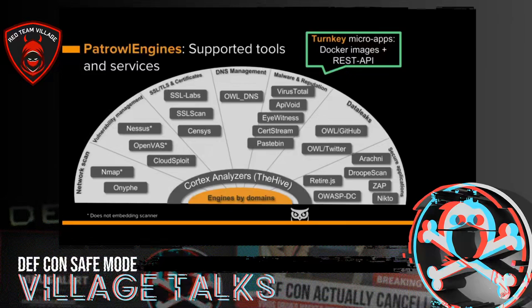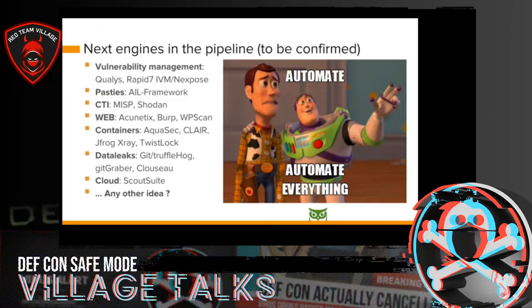I don't see many companies that use Patrol with all of these engines — it's more or less separated between vulnerability assessment, data leaks, CI/CD, static code analysis, or dynamic code analysis. We also have engines for vulnerability management, CTI, web application scanners, container security, data leaks, and so on. The engines are also open source and we accept and welcome contributions — please create or suggest new engines or give us ideas to develop them.